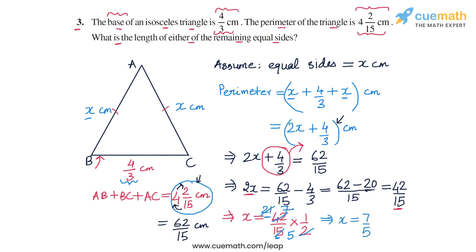And this means that the length of either equal side is 7 by 5 centimeter. So this is the answer to question number 3. The length of either equal side is 7 by 5 centimeter. If you want, you can write this in mixed fraction form as 1 and 2 by 5 centimeter. And this completes question number 3.